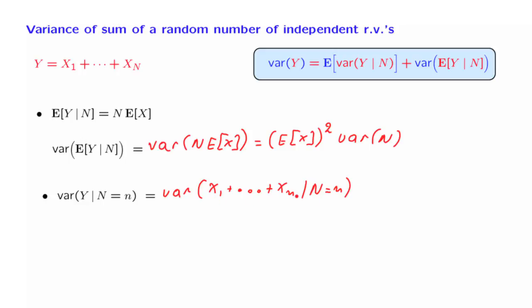Because these random variables are now independent of this random variable capital N, their distribution does not change based on this information, and so we obtain the unconditional variance. Now the unconditional variance of a sum of N random variables is just N times the variance of each one of them, which we denote with this notation.